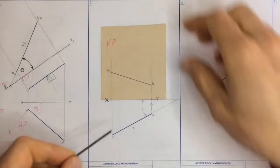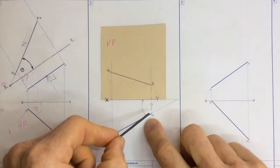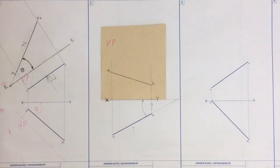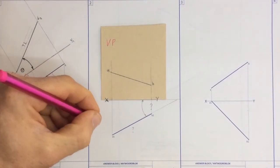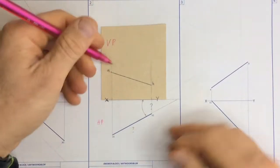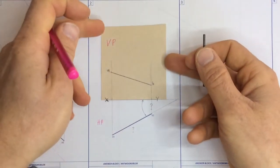Basically, I've got a line segment over here, and you can see I've got what they call the horizontal plane. I'm going to call it HP for now. And I've got the vertical plane.